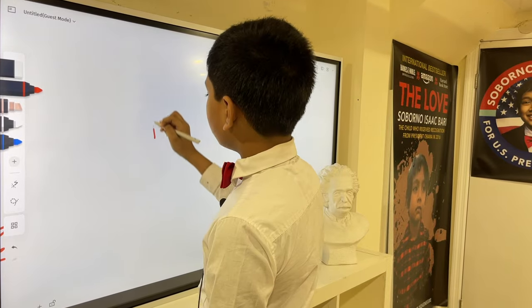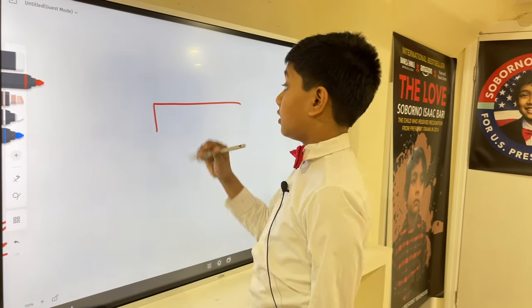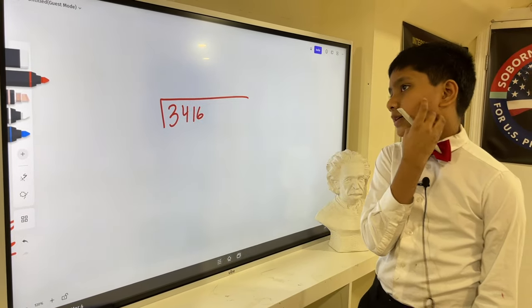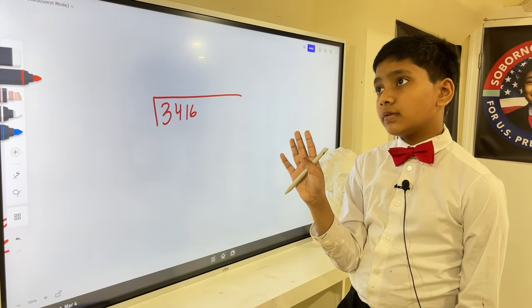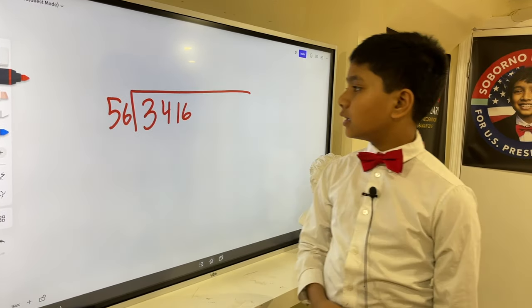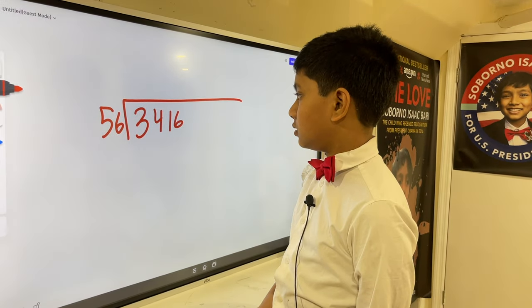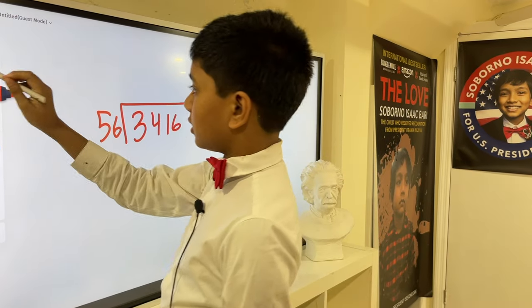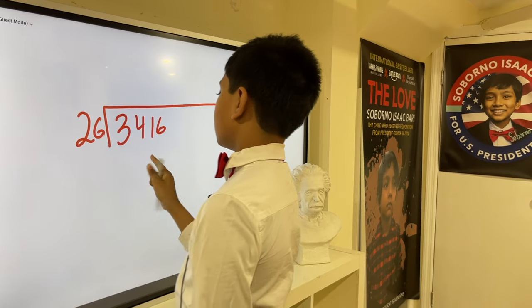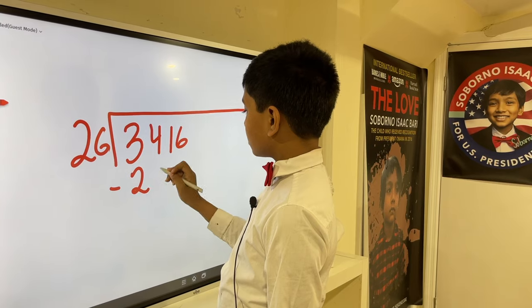So, now, let's try doing it with some random numbers. So, I'm going to pick four random digits. So, like, I don't know. 3, 4, 1, 6. And then, two random digits. Like, I don't know. 56. Sure. Okay. So, let's try doing long division with this. Okay. Let's pick 26. Sure. Okay. So, let's do long division with this.